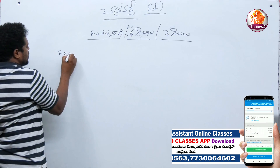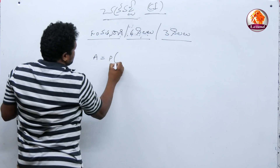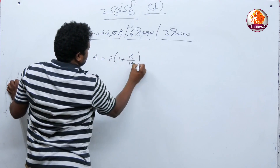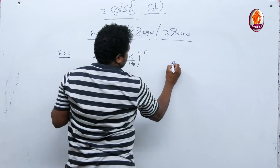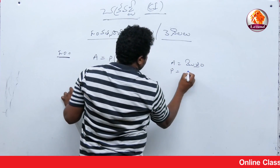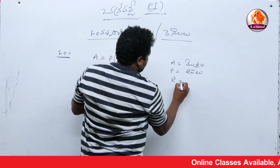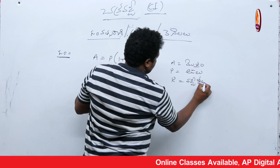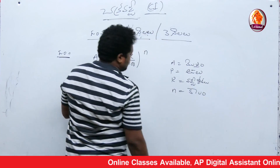A is equal to P of 1 plus R by 100 all to the power N. This is the formula. A means amount — Mottamu. P means Asalu, Principle. R means Waddi Rate, and N means column, number of years.